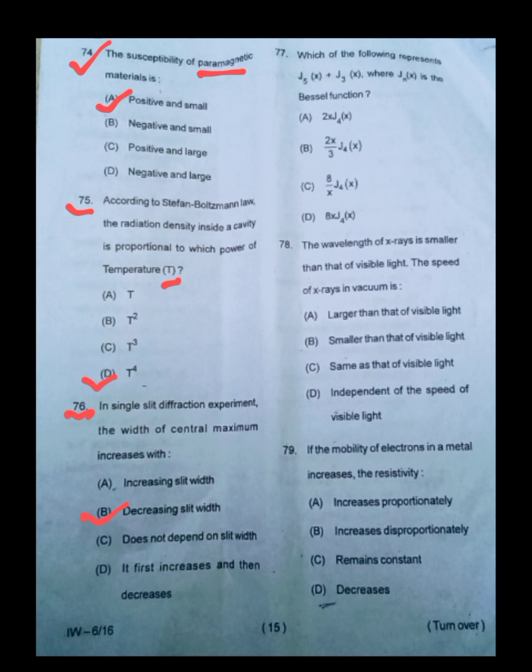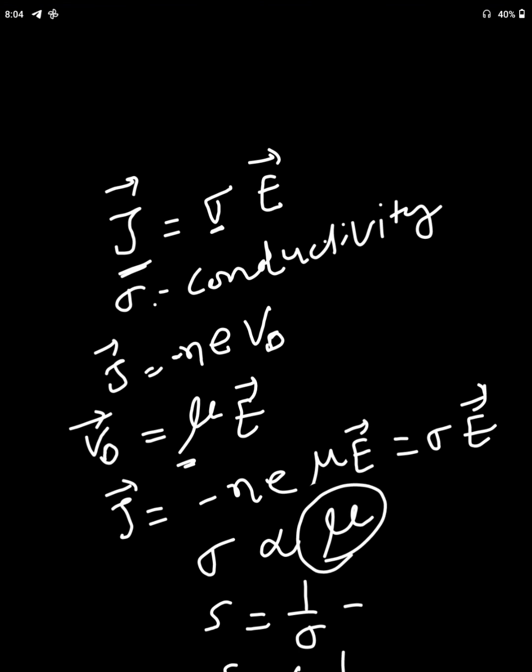In this question number 77, which of the following represents j5x plus j3x plus jnx is the Bessel function. It is a direct equation, direct recurrence equation, which says that 2n jnx is equal to x multiplied by jn minus 1x.